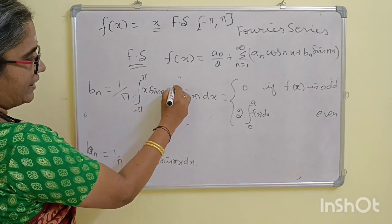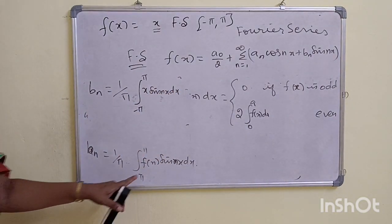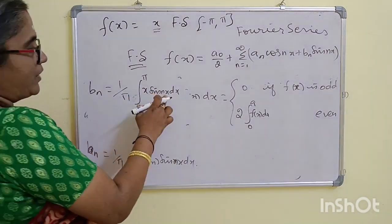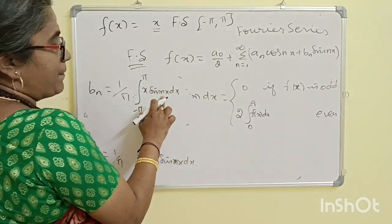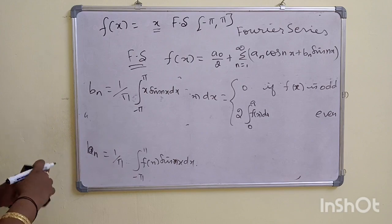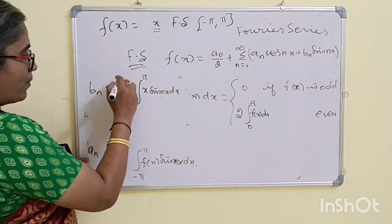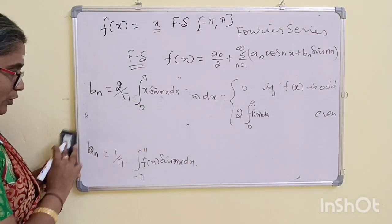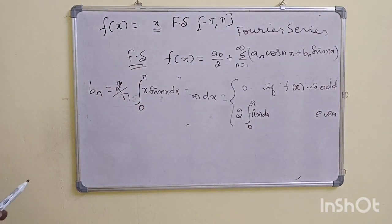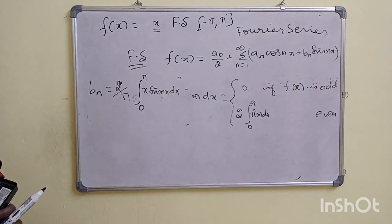For Bn: Bn = integral of sin(nx) dx. x times sin(nx) dx. Since x is odd and sin(nx) is odd, their product is even. So Bn = (2/π) times the integral from 0 to π — we will use this integration relation for An and Bn.